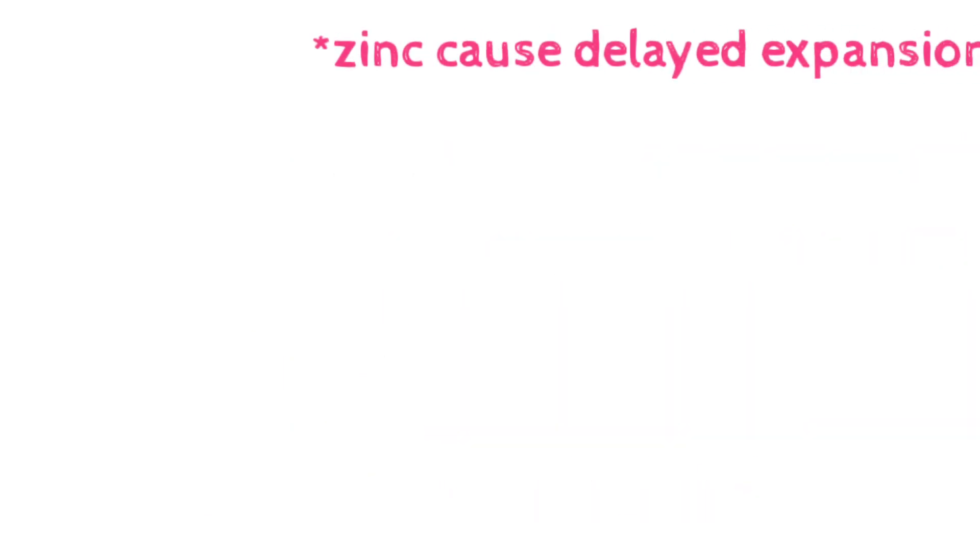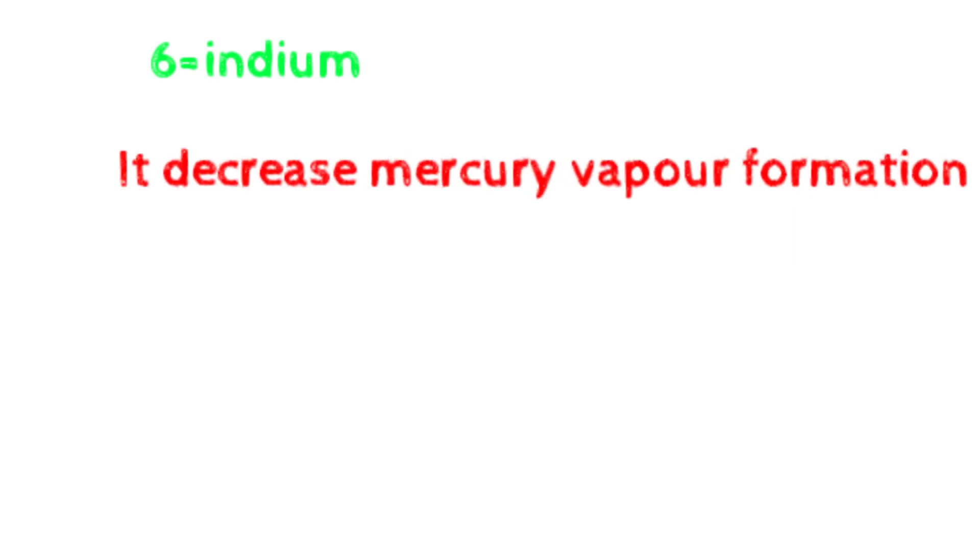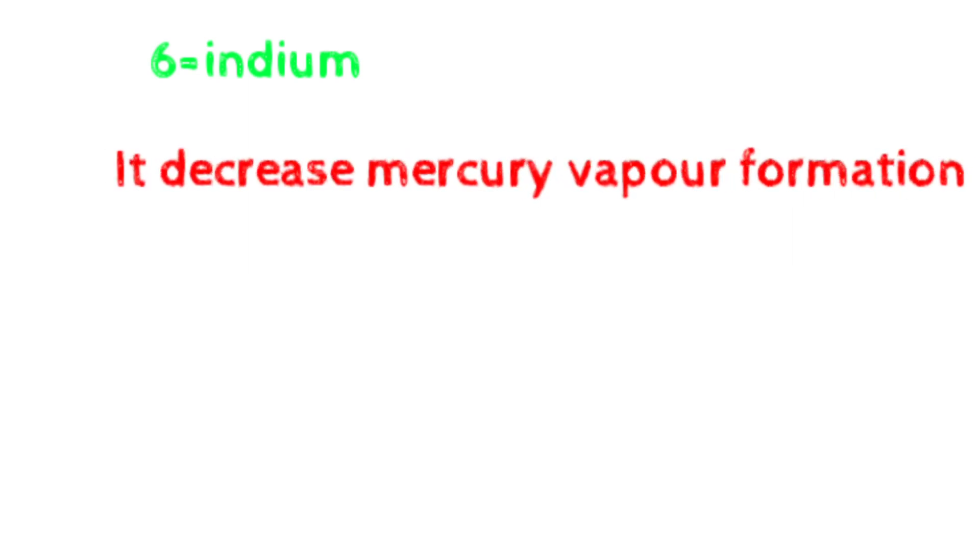Today's topic outline includes: number one, what does the word amalgam mean; second, definition of amalgam; third, amalgam composition; and number four, the function of each constituent of amalgam.